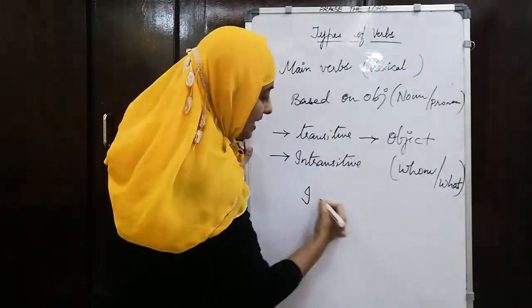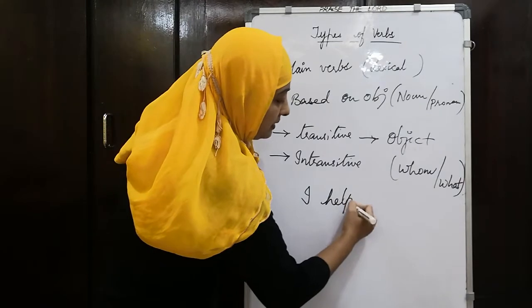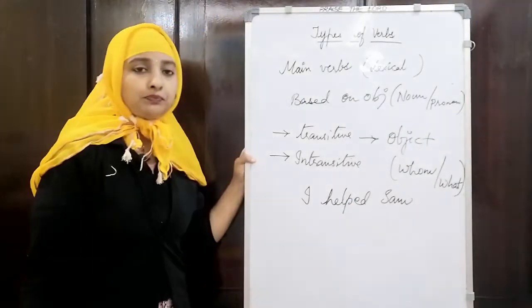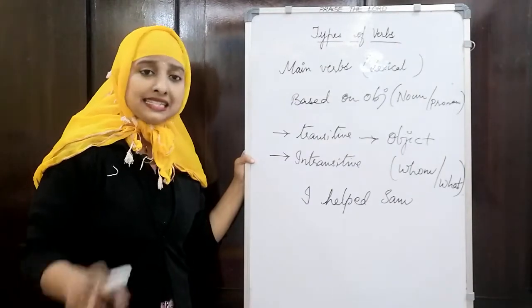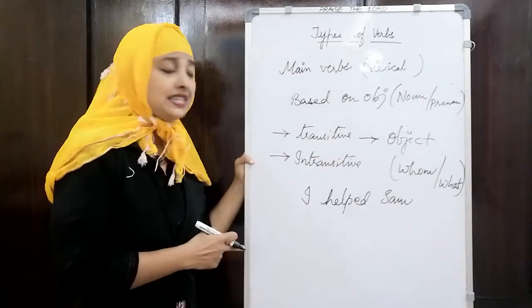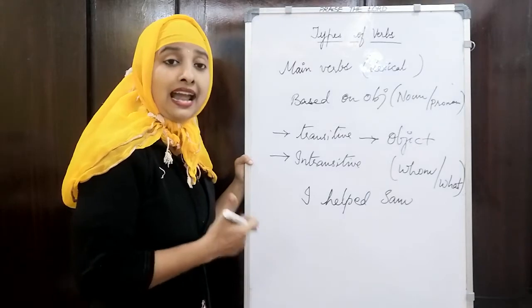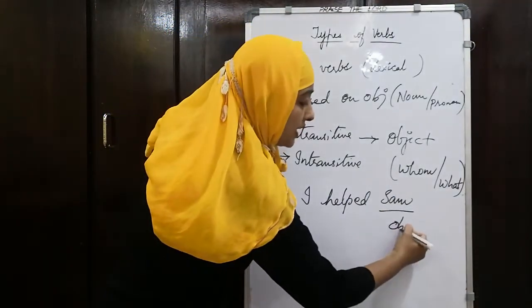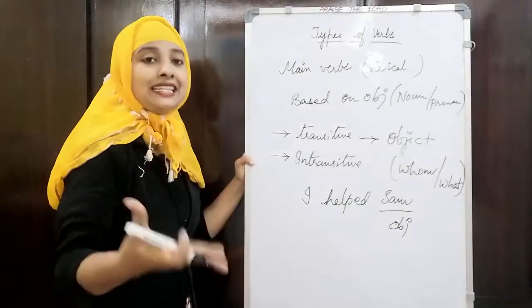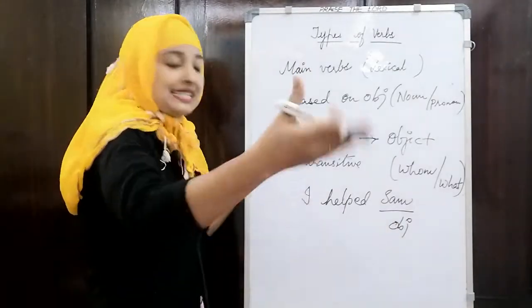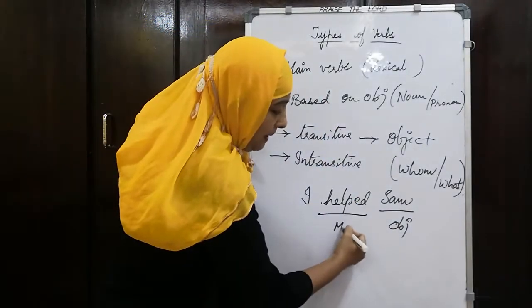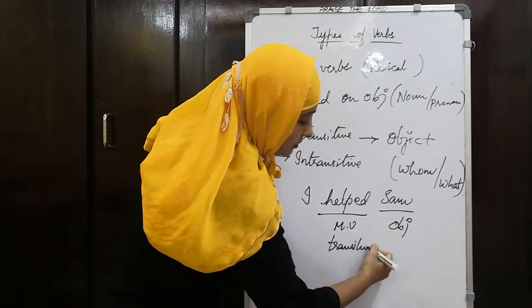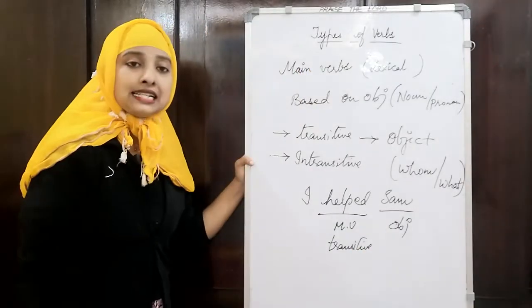In the previous sentence 'I helped Sam,' you can identify: whom did I help? I helped whom? Sam. So 'helped' here is the main verb, and it is a transitive verb because it has an object.